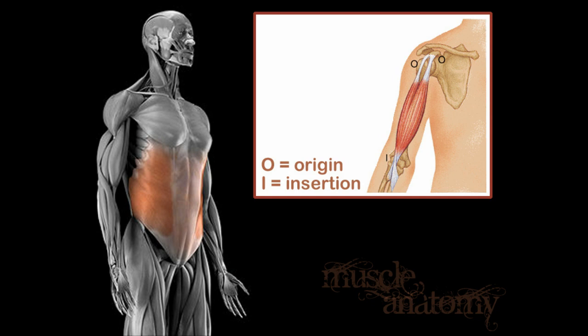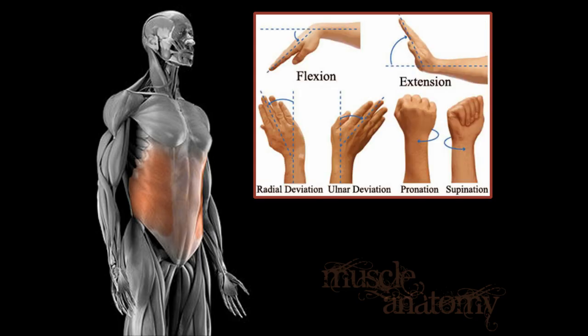Now, some of the actions of the various muscles — I'll be talking about flexion and extension. Remember that flexion is the movement that decreases the angle between two parts, and extension is the reverse.